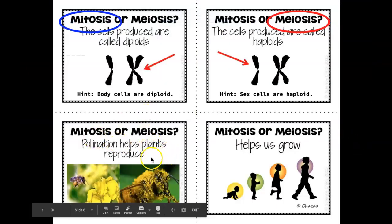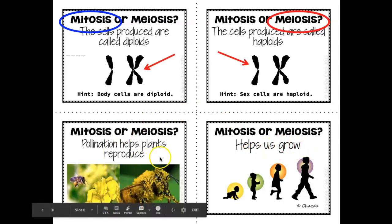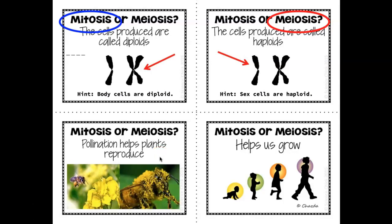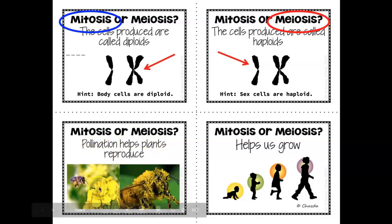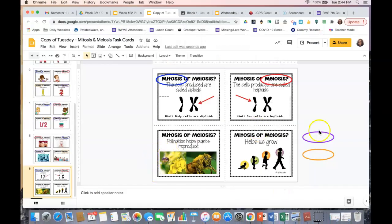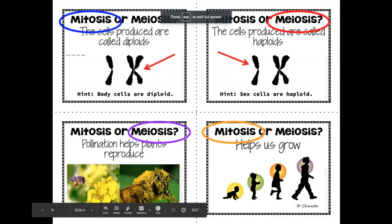Pollination can help plants reproduce, and then which one helps us grow? Plants and flowers can be sexual reproducers if pollen from one plant is carried to another — that's sexual reproduction, taking the reproductive cells from one plant to another — so that's meiosis. The one that helps us grow is mitosis: it helps our body cells replicate and helps us grow. There are your answers for this slot.